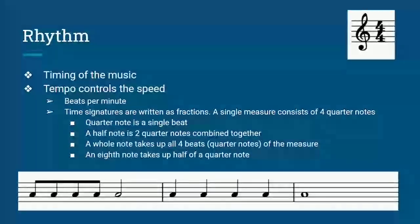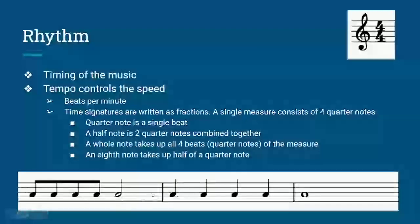Different kinds of notes tell you the different kinds of speeds as well. A quarter note is a single beat. Each four quarter notes make up a whole measure. A half note consists of two quarter notes together, which takes up half of a measure. A whole note takes up a whole measure, because it's four beats. And an eighth note is half of a quarter note, which means one single eighth note takes up an eighth of a measure.